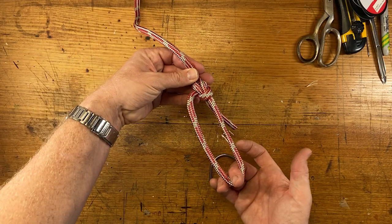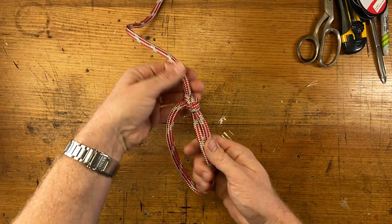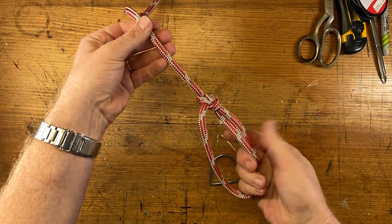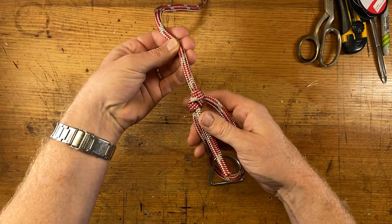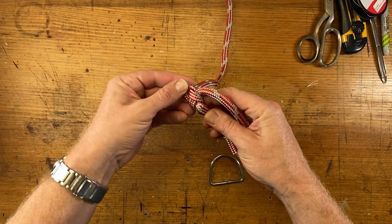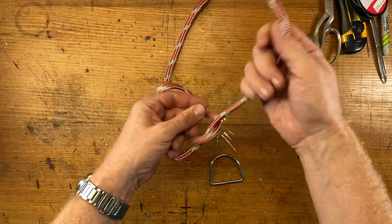Now pull the standing end and the bitter end and you've got yourself a loop. It's a very strong knot for making a loop, a bowline, and you can pull that as tight as you want and dress it. You can pull that between two cars and you'll still be able to undo it very easily by turning it over and flipping that little notch bit there. It always comes apart very easily, the bowline, very versatile knot.